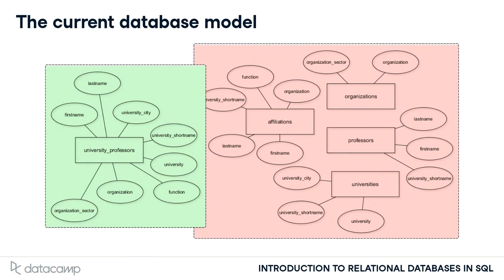At this moment, only the university professors table holds data. The other four, shown in red, are still empty. In the remainder of this chapter, you will migrate data from the green part of this diagram to the red part, moving the respective entity types to their appropriate tables. In the end, you'll be able to delete the university professors table.